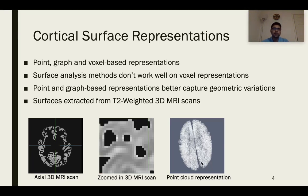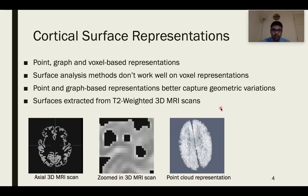Point and graph-based representations better capture the geometric variations. The surfaces in our dataset have been extracted from T2-weighted 3D MRI scans. Here you can see a zoomed-in view of an axial 3D MRI scan showing the individual voxels, and here is a point cloud representation of a brain surface where each node is mapped to a point. The problem here is that there's no geometric connectivity information due to the absence of edges.